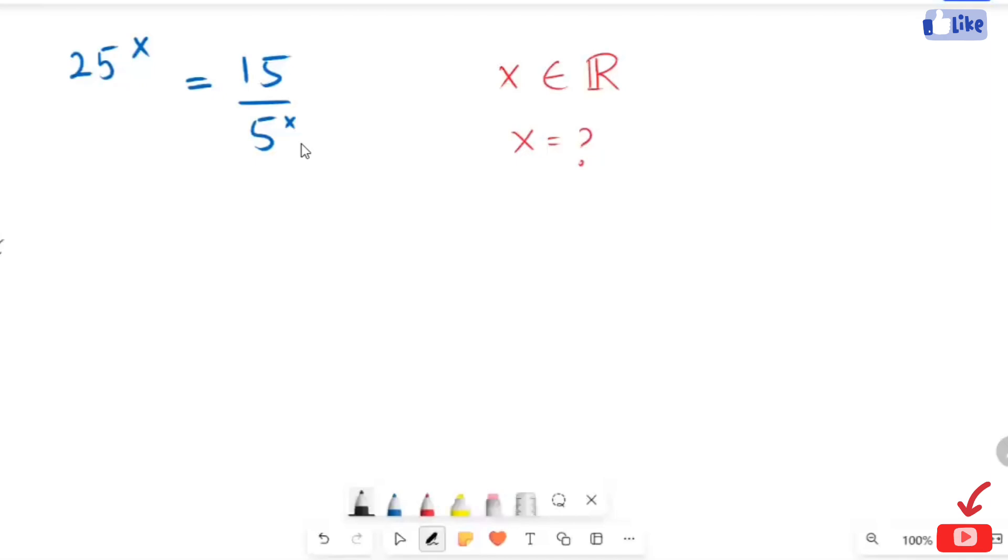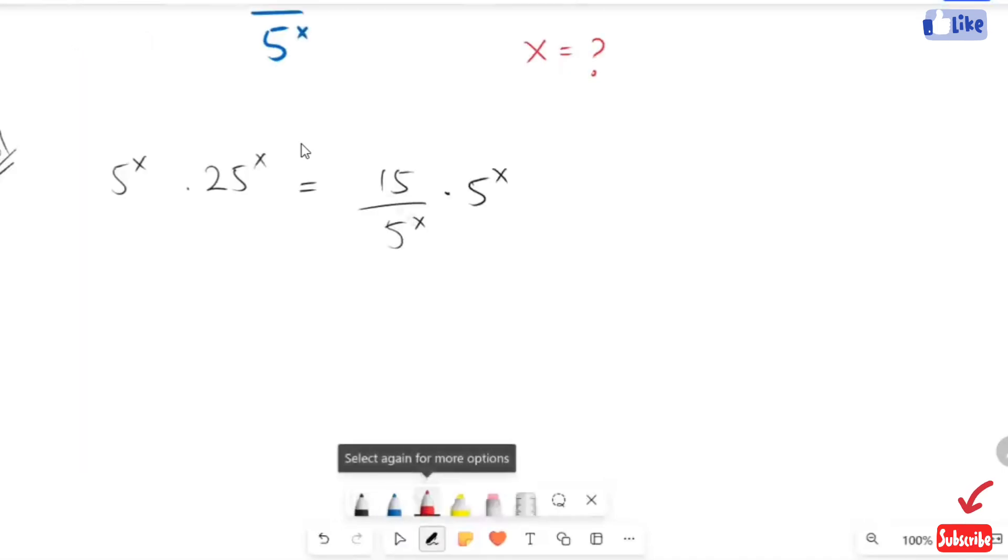First, I'm going to multiply both sides by 5 raised to x. Now here I'm going to apply the exponential rule.